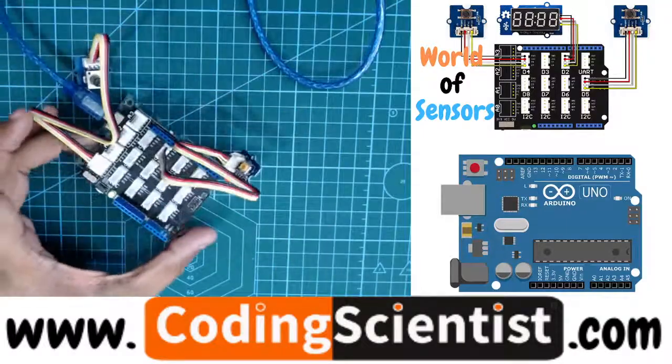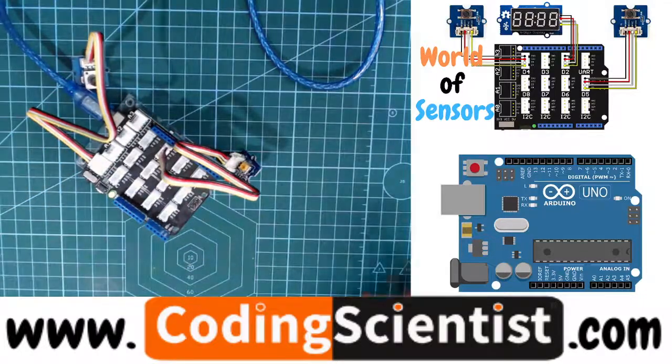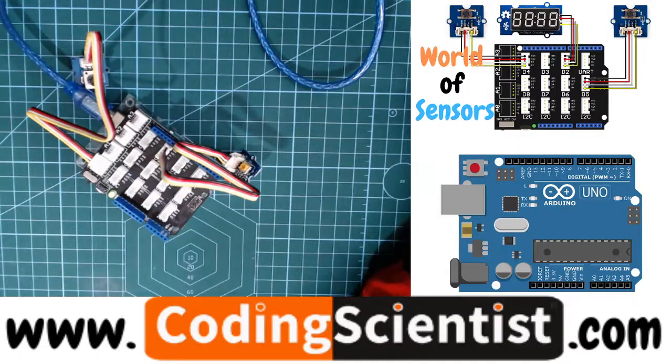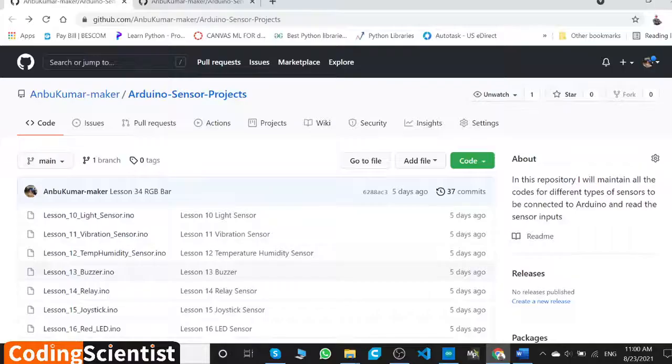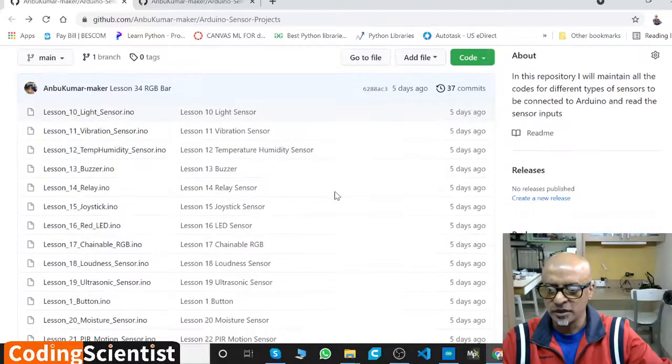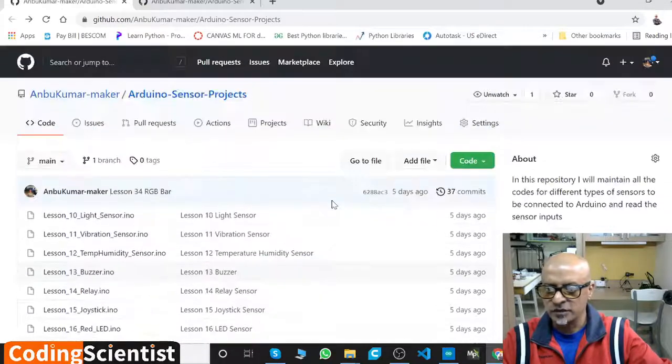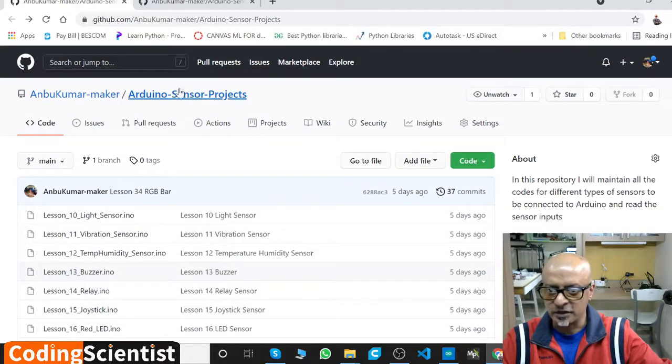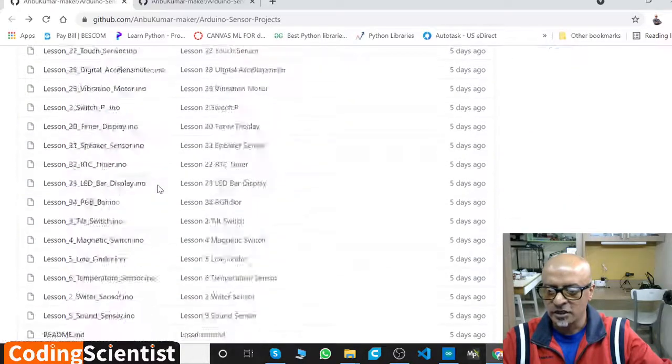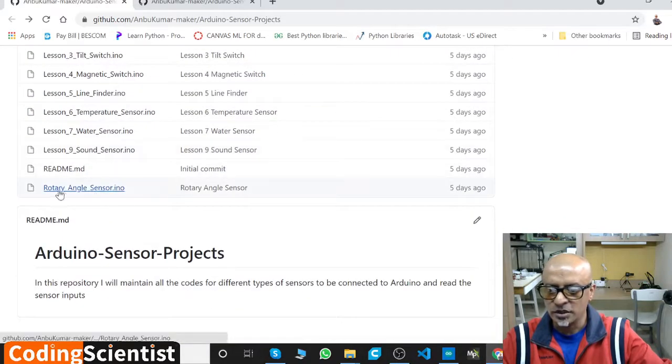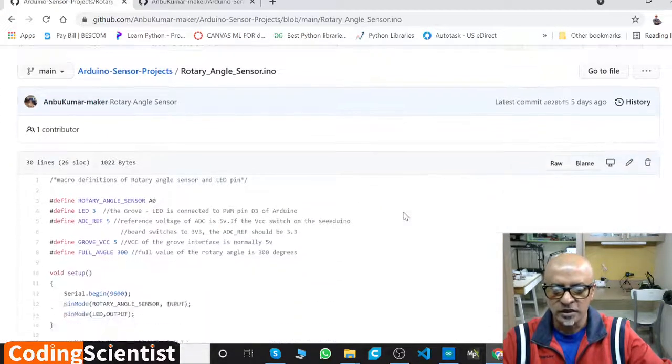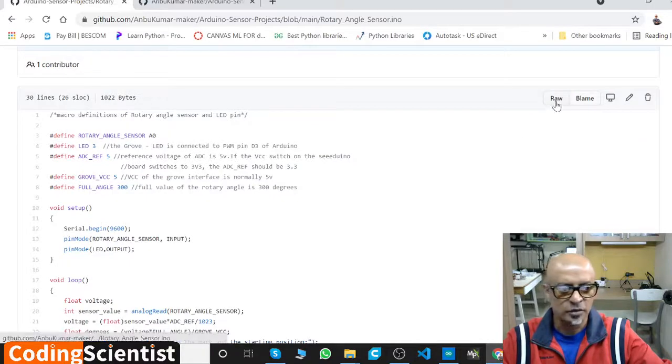Once this is connected, you need to go to my GitHub. If you go to my GitHub, scroll down to the bottom. First you need to go to the correct section - Arduino Sensor Projects. Then scroll down to the bottom - rotary angle sensor dot ino. This is the code file. Go ahead and click that and then go to raw.